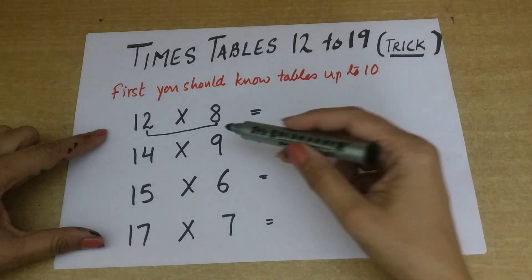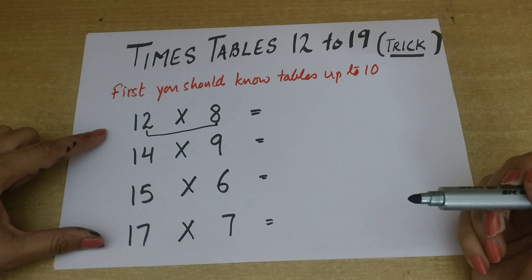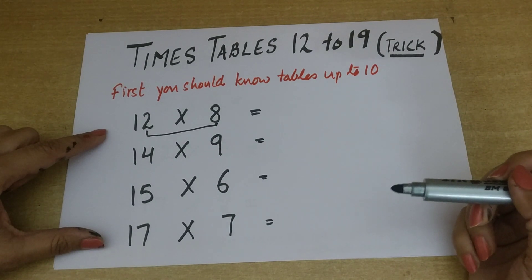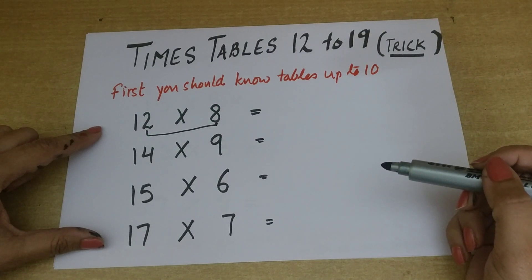So now here I have taken four tables. But before you know this trick you should know the tables up to 10 by heart. So before you go any further, first learn your tables up to 10. And those who already know the tables up to 10 can continue watching the video.